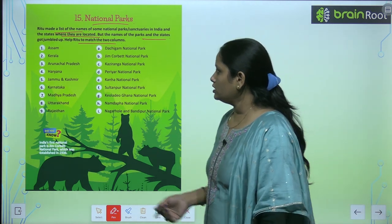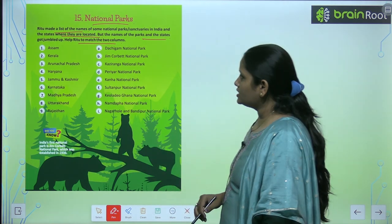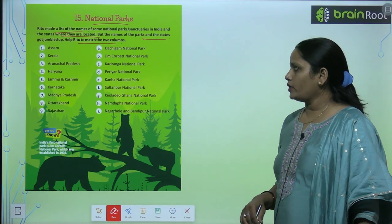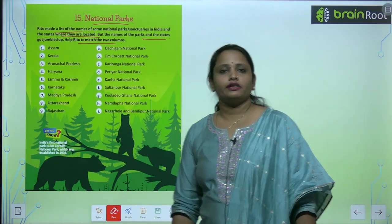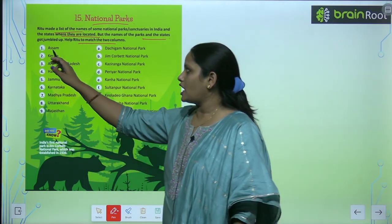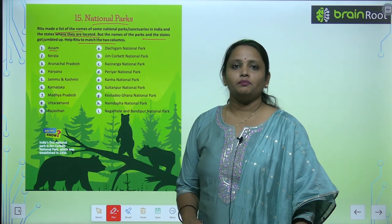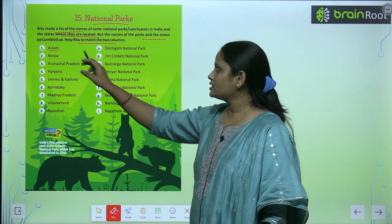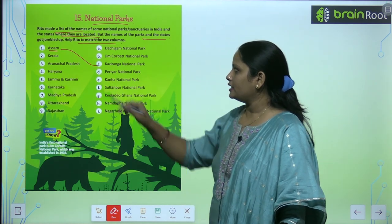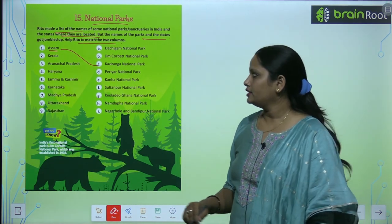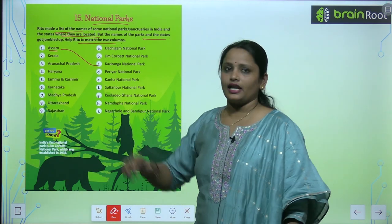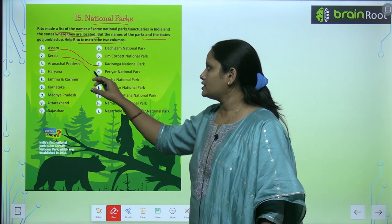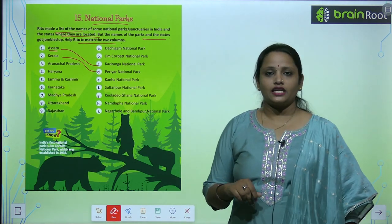The first one is Dachigam National Park. Which national park is located in Assam? It is Kaziranga National Park. Next is Kerala — the national park here is Periyar National Park.